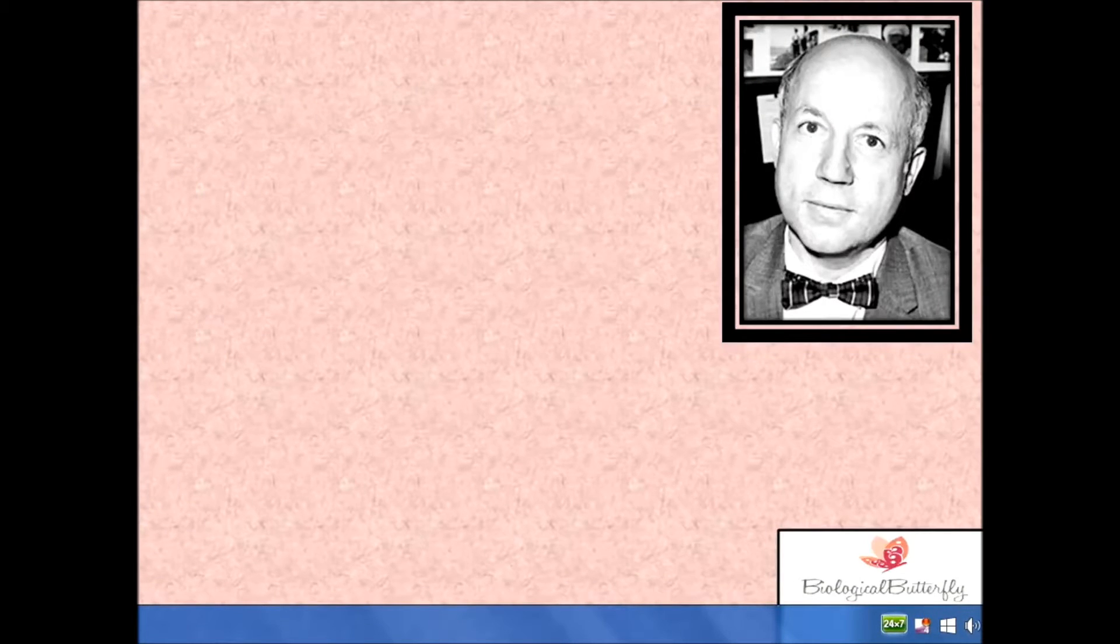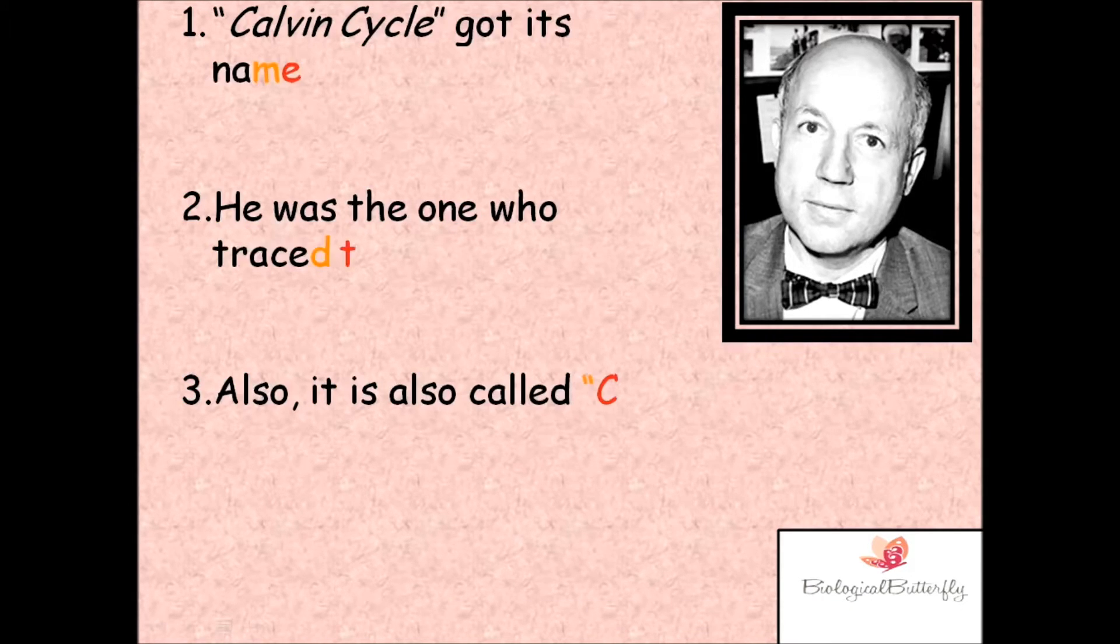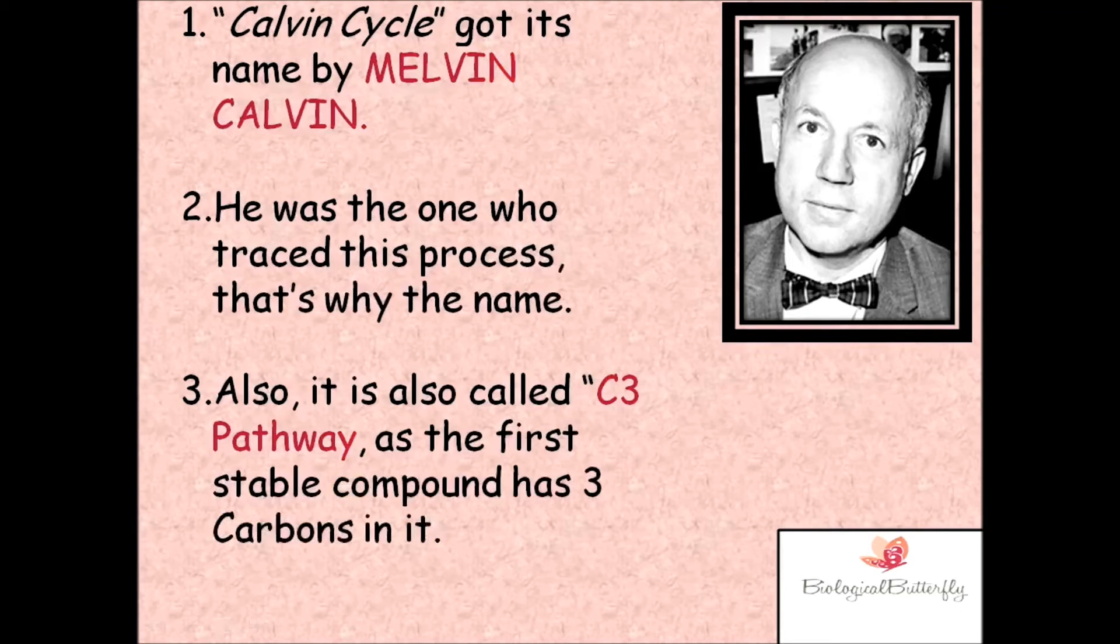Welcome back to my channel. Today we are going to learn about the Calvin Cycle. The Calvin Cycle got its name from Melvin Calvin. He was the one who traced this process, that's why the name. Also, this process is called the C3 pathway, as the first stable compound has three carbons in it.